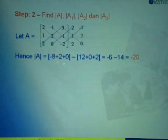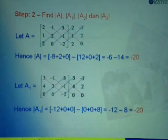So from here, negative 8 plus 2 will give us negative 6 minus 12 plus 2 equals to 14. So negative 6 minus 14 is equal to negative 20.